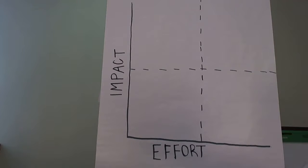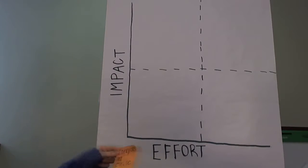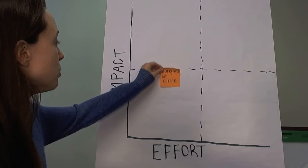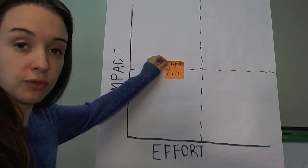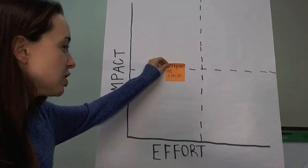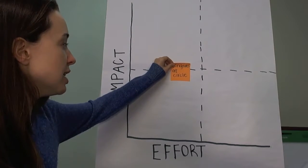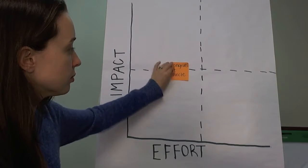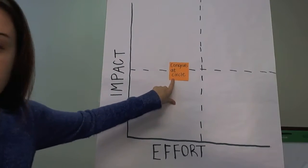Sometimes these brainstorming sessions will look a lot bigger, but today we just have a few examples. One idea somebody comes up with is: what if we congratulated at circle time every time a child has been there for two weeks straight? That will make a child feel special, but it is just a congratulation, so we'll put it at medium impact. The effort is kind of low — we track attendance already, we'll just double-check each Friday. So it's kind of low effort and low impact.